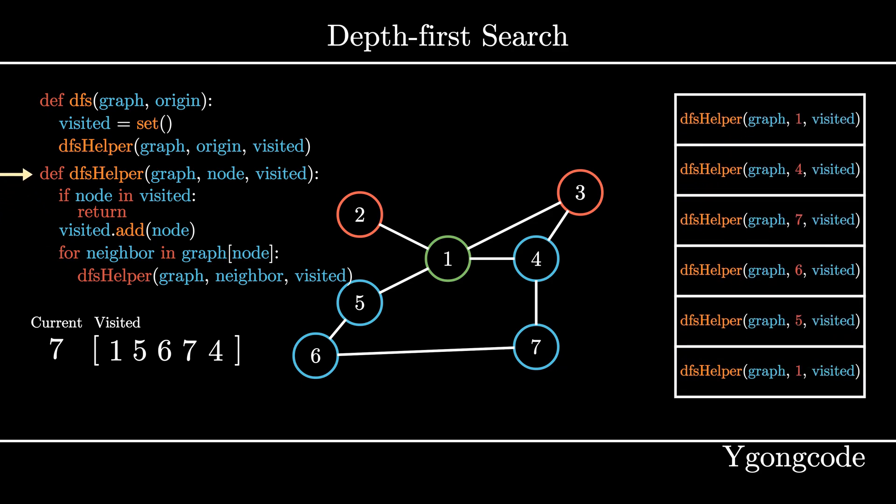At dfsHelper 1, since node 1 has been visited, we return, pop it off the call stack, and return to dfsHelper 4.